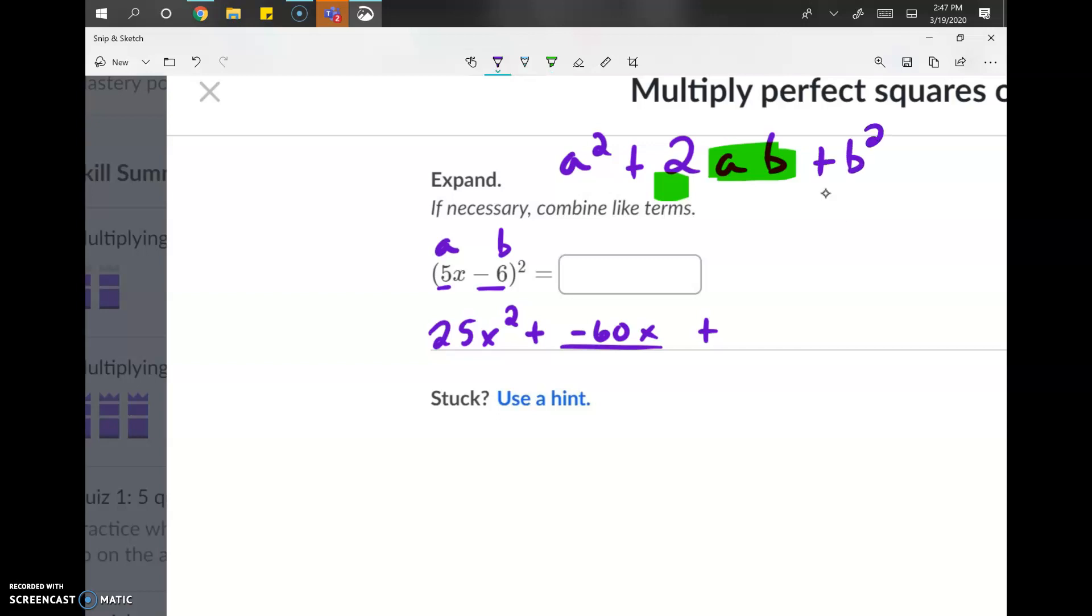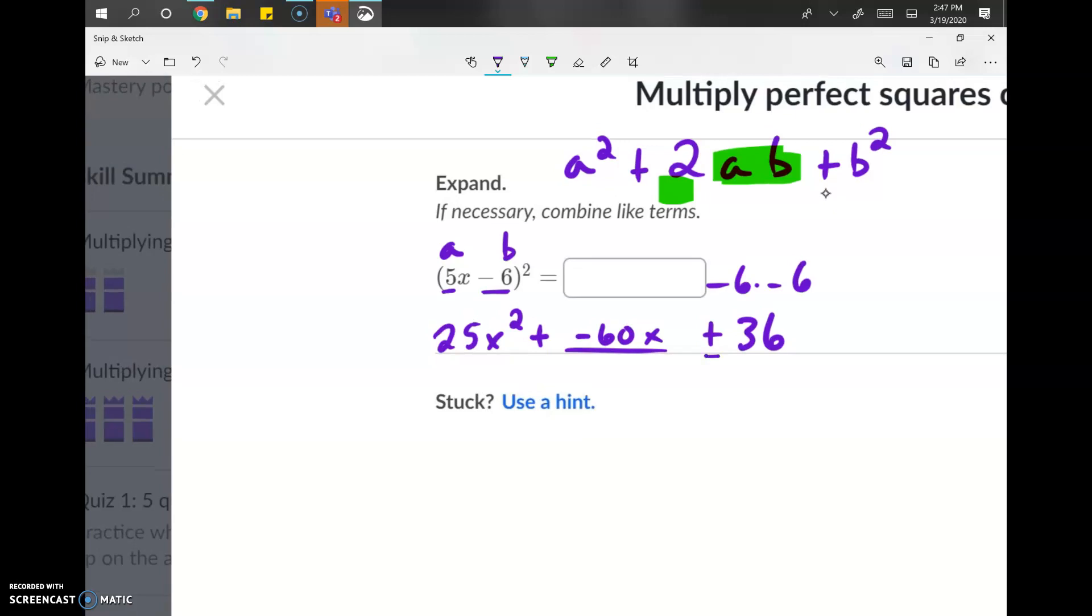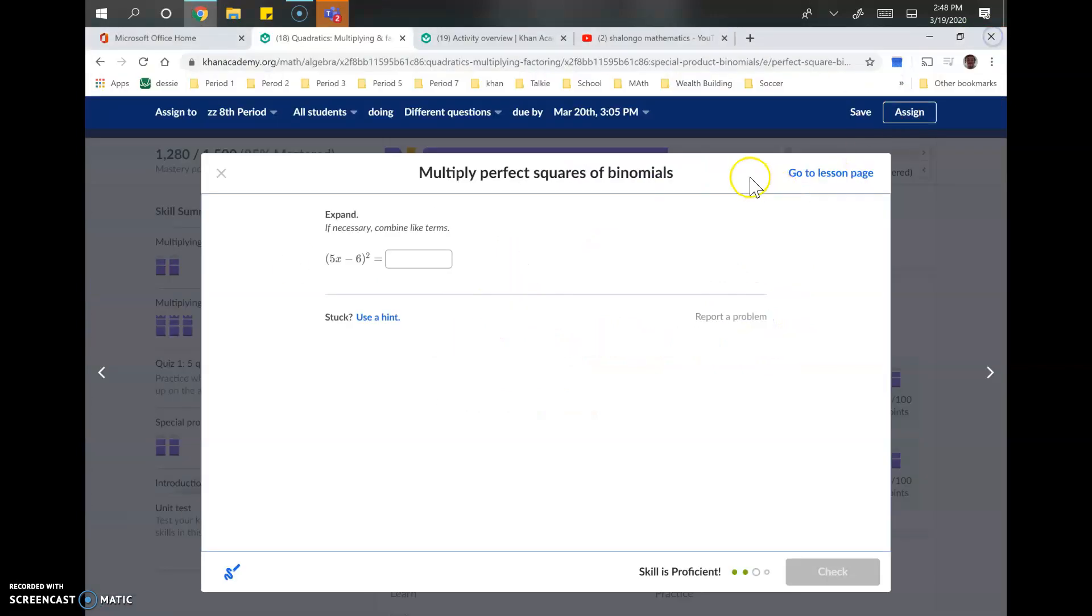And then we've got the B squared part. Negative 6 squared, positive 36. Remember, negative 6 times negative 6, not negative 6 times positive 6. Negative 6 times negative 6. So, the last term should always be positive when we are doing perfect squares. So, 25x² minus 60x plus 36. That is the answer that we're going to go ahead and punch in.